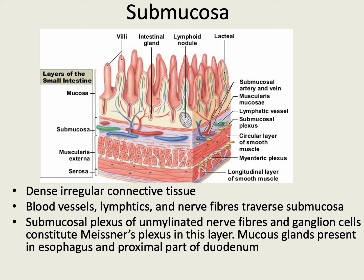After the mucosa, we have the submucosa. The submucosa is a dense irregular connective tissue consisting of blood vessels, lymphatic vessels, and nerve fibers that traverse it. The submucosal plexus of unmyelinated nerve fibers and ganglion cells forms a plexus called Meissner's plexus. Mucous glands are also present in the submucosa of the esophagus and the proximal part of the duodenum.